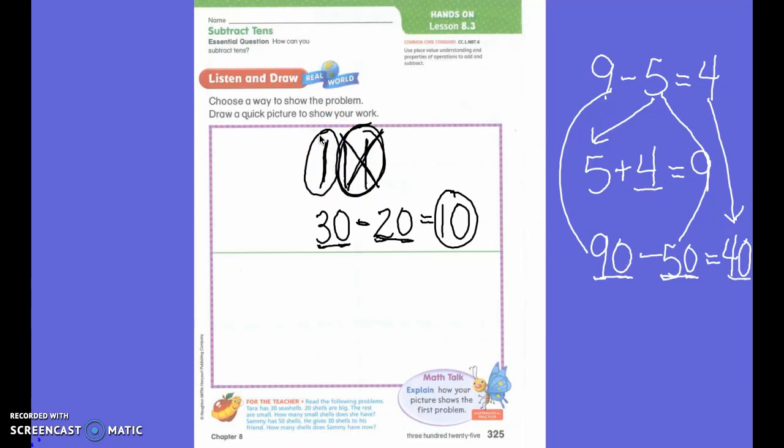Let's do another one. Sammy has 50 shells. He gives 30 shells to his friend. I'm going to show that by circling 30 of them and crossing them out. I have to show that I crossed them out by putting a subtraction sign or a minus sign and I crossed out 30. I did not cross out 3. That is different than 30. I crossed out 3 tens.